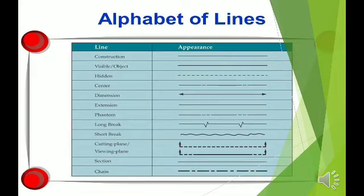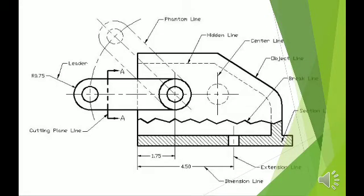Another examples of Alphabet of Lines: Construction, Visible or Object, Hidden, Center, Dimension, Extension, Phantom, Long Break, Short Break, Cutting Plane or Viewing Plane, Section, and Chain. These are another examples.